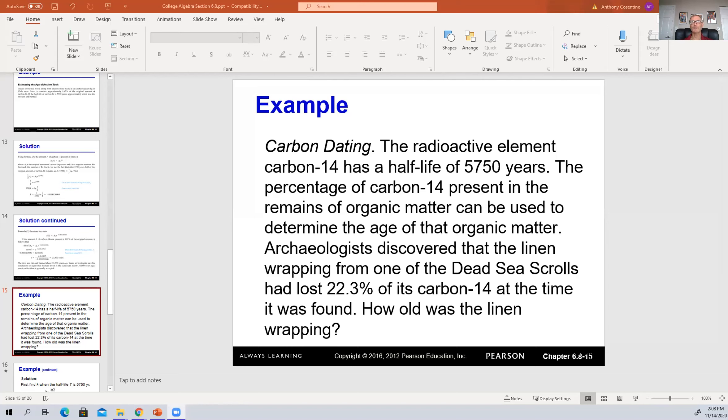It's a radioactive element of carbon-14 that has a half-life of 5,750 years. This idea of figuring out how much of this carbon-14 is in something that's really old, you can measure that and then figure out how old it is. Here's an example of the Dead Sea Scrolls. What this one says is that 22.3% of the carbon-14 was lost at the time it was found. So it's kind of a tricky way of doing it. If you lost 22.3%, how much is left? Well, how much is left is 100% minus the 22.3%. So that's a little bit tricky.